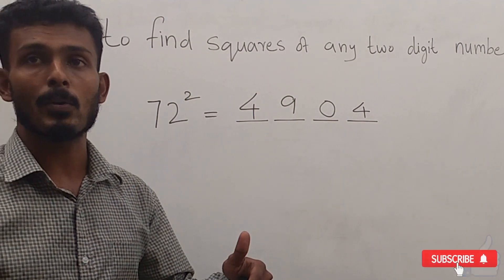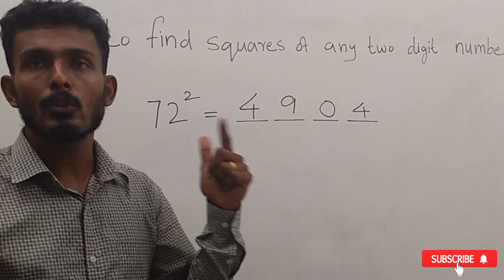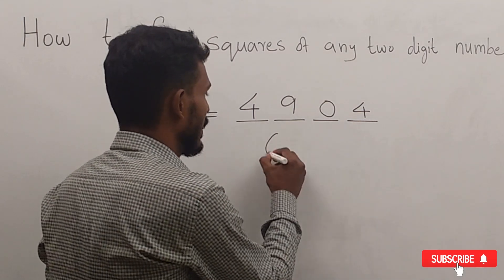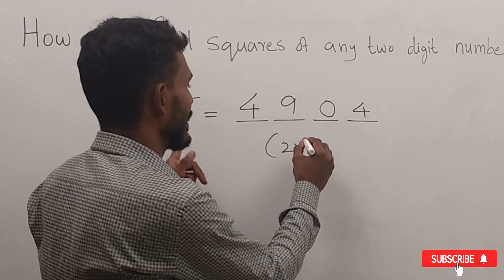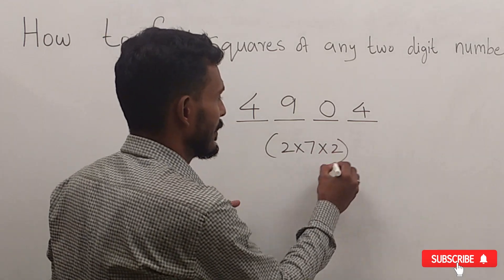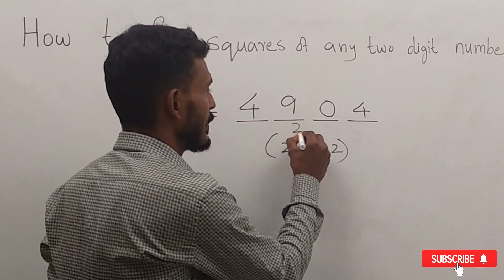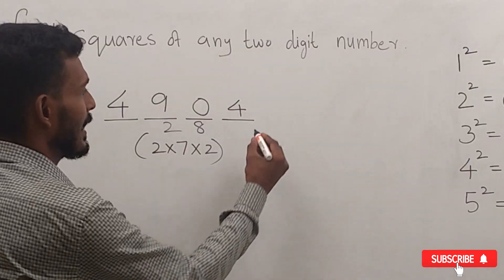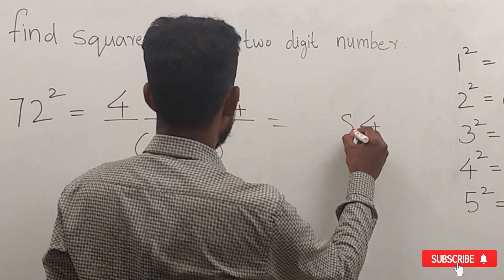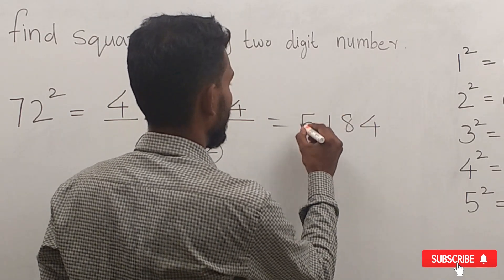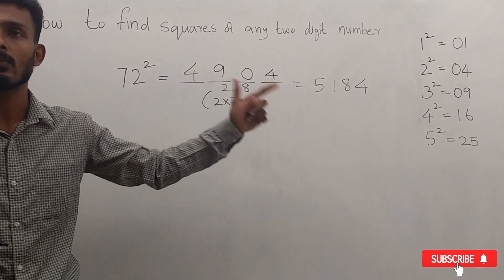What do we do now? 2 into a into b formula is 2 into 7 into 2. That is 2 into 7 is 14, 14 into 2 is 28. 28 we can add. 4, 8, 1, 5. That is 5184.